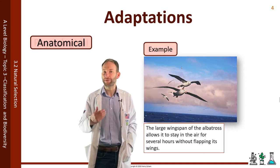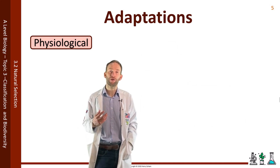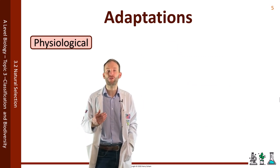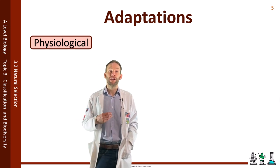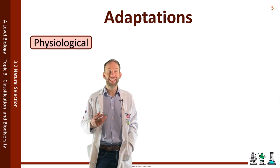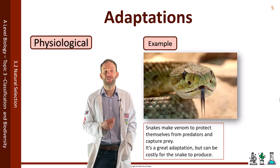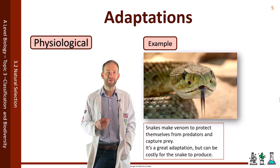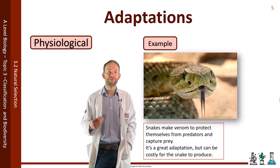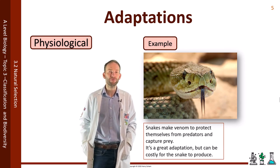Physiological adaptations are those that involve the way the organism works — for example, its biochemical pathways, enzymes and metabolism. For example, snakes make venom to protect themselves from predators and capture prey. It's a great adaptation but can be costly for the snake to produce.